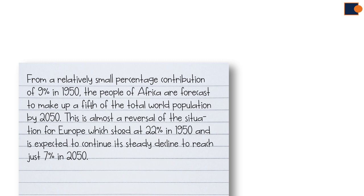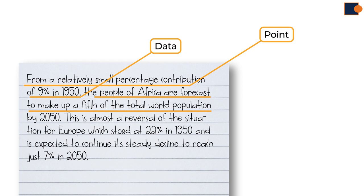Let's have a look at an example. Well, first sentence start with a point, from relatively small percentage contribution, and then follows the data, of 9% in 1950. The people of Africa are forecast to make up a fifth of total world population. Again, another point.